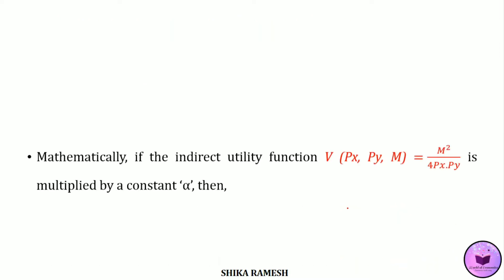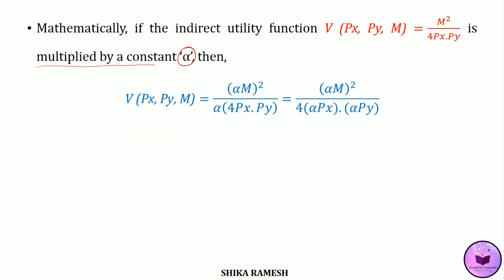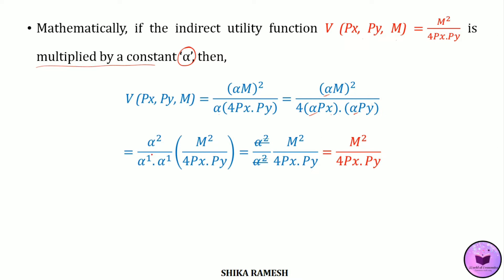If the Indirect Utility Function v(px, py, m) equals m² divided by 4·px·py, and we multiply all arguments by a constant alpha, we can write it as v(px, py, m) equals (alpha·m)² divided by (alpha · 4·px·py). Solving this gives alpha²·m² divided by (4·alpha·px · alpha·py). Separating the alpha terms, we get alpha² divided by alpha¹ · alpha¹, multiplied by m² divided by 4·px·py. Since alpha² cancels with alpha², we get m² divided by 4·px·py, which is the Indirect Utility Function itself.